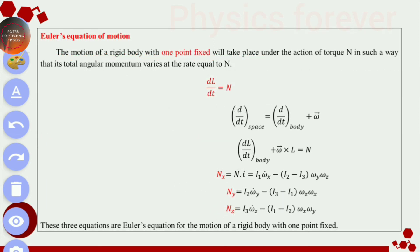Euler's equations of motion define the motion of a rigid body. The total angular momentum varies at a rate equal to the torque n, so dL/dt equals n. We write this as: space equals body plus angular velocity. These equations are asked repeatedly in previous year exams.